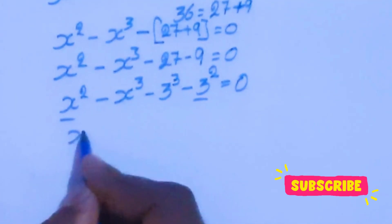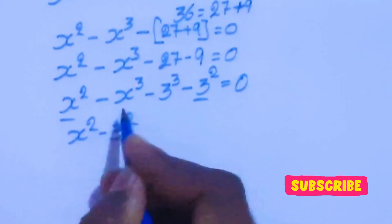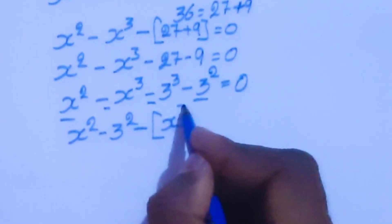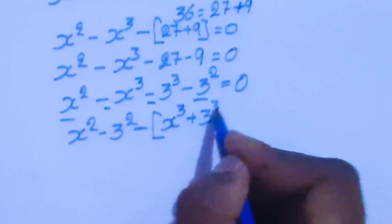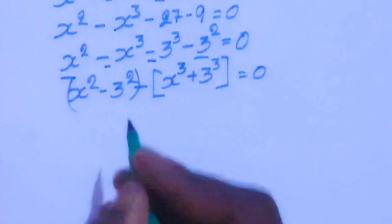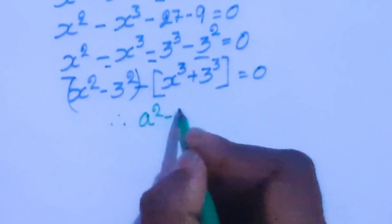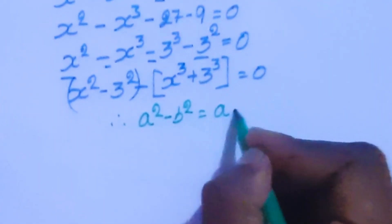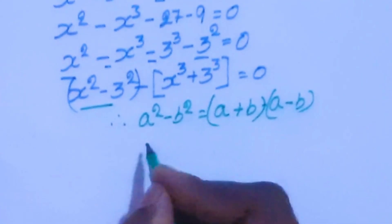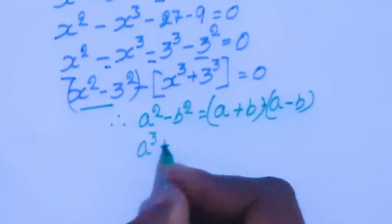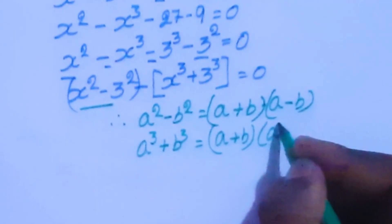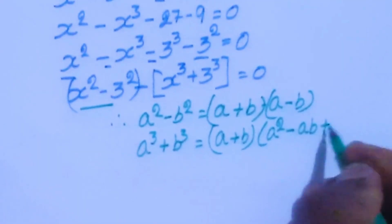Now x squared minus 3 squared — we are going to take this minus common out. So minus x cubed plus 3 cubed equal to 0. Now we are going to replace this using the algebra formula: a squared minus b squared equal to (a plus b)(a minus b), and also a cubed plus b cubed equal to (a plus b)(a squared minus ab plus b squared).